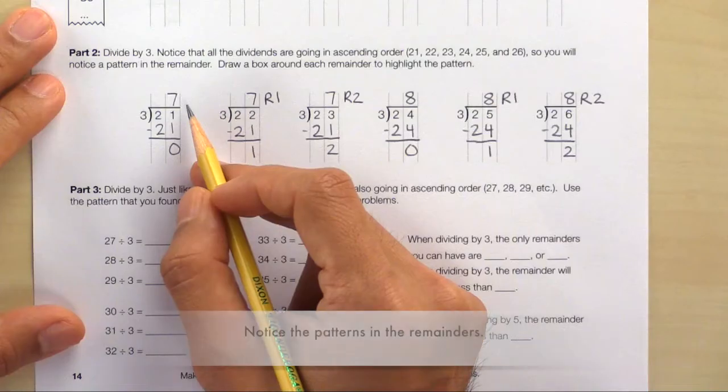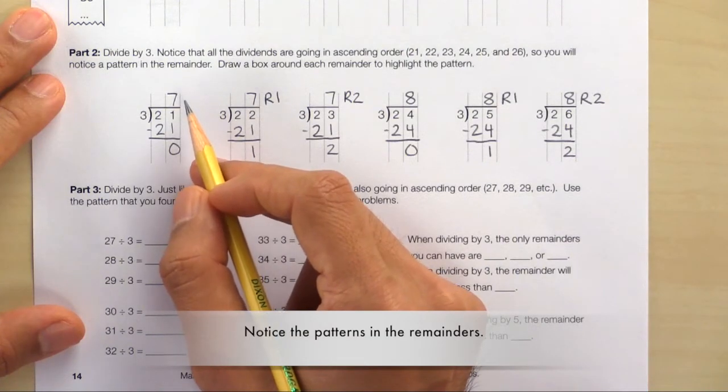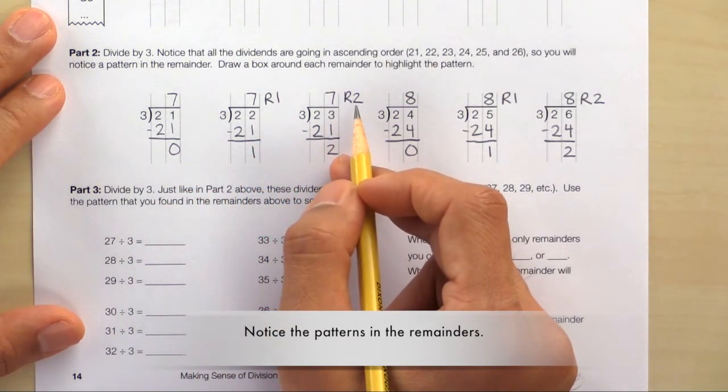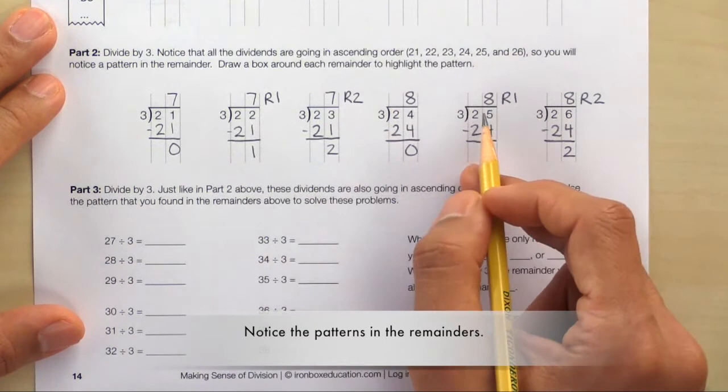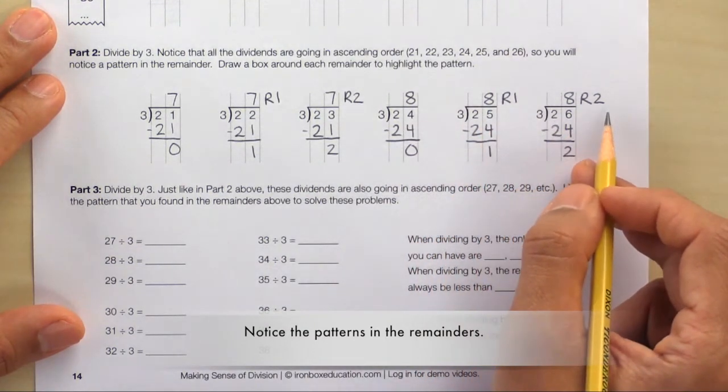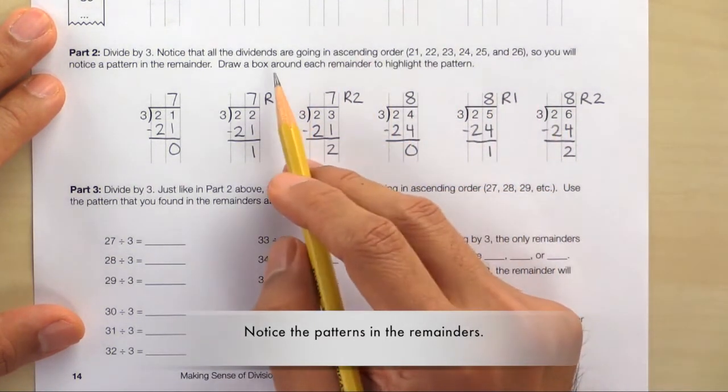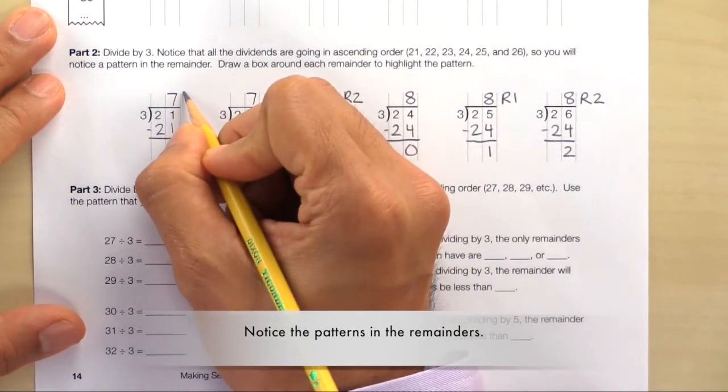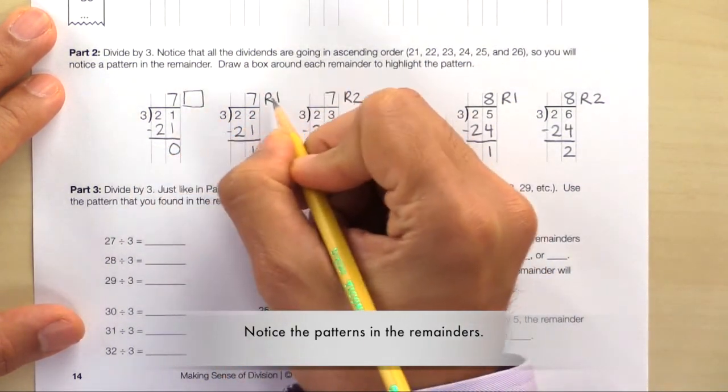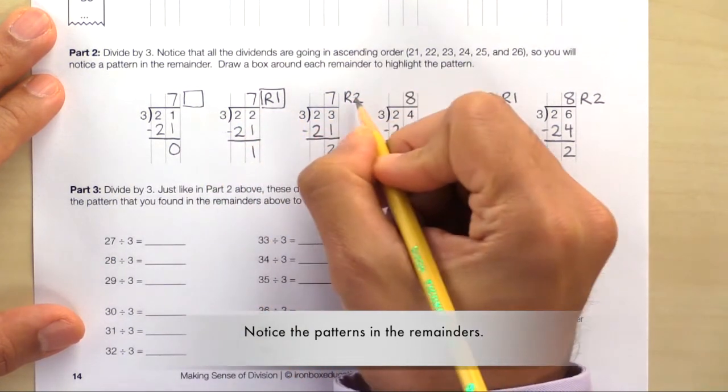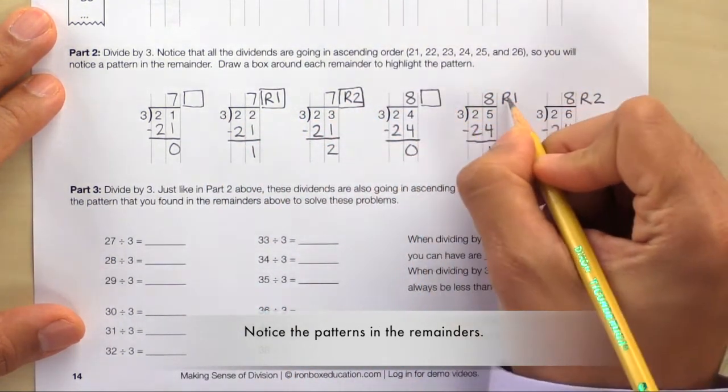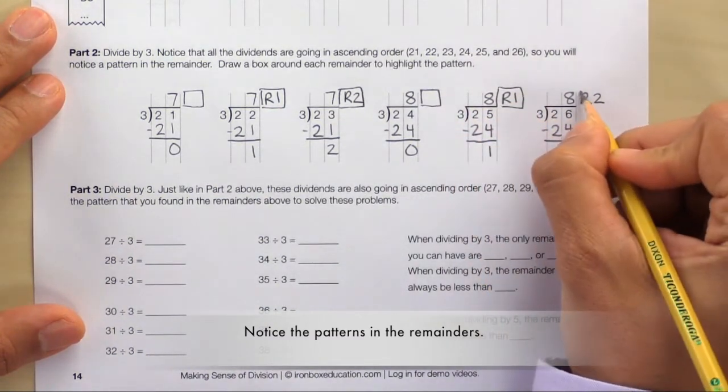Let's jump ahead and take a look at the quotients for each of these problems. So here, the quotients are 7, 7 remainder 1, 7 remainder 2, 8, 8 remainder 1, 8 remainder 2. So let's draw a box around each remainder to highlight the pattern. Here, there was no remainder, remainder 1, remainder 2. No remainder, remainder 1, remainder 2.